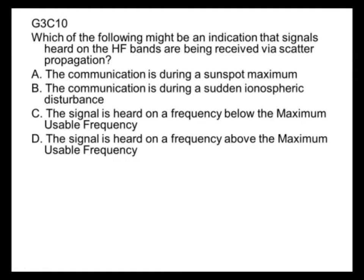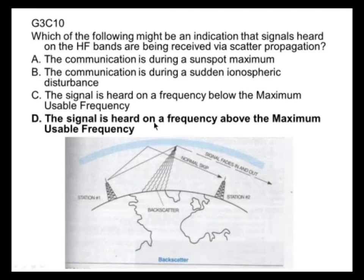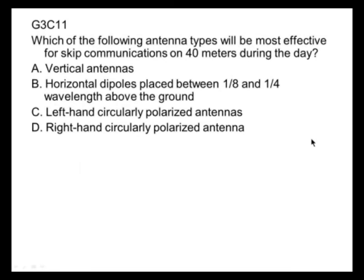Which of the following might be an indication that signals heard on the HF band are being received by scatter propagation? The signal is heard on a frequency above the maximum usable frequency. With the maximum usable frequency, you're getting a little signal back from the scatter.